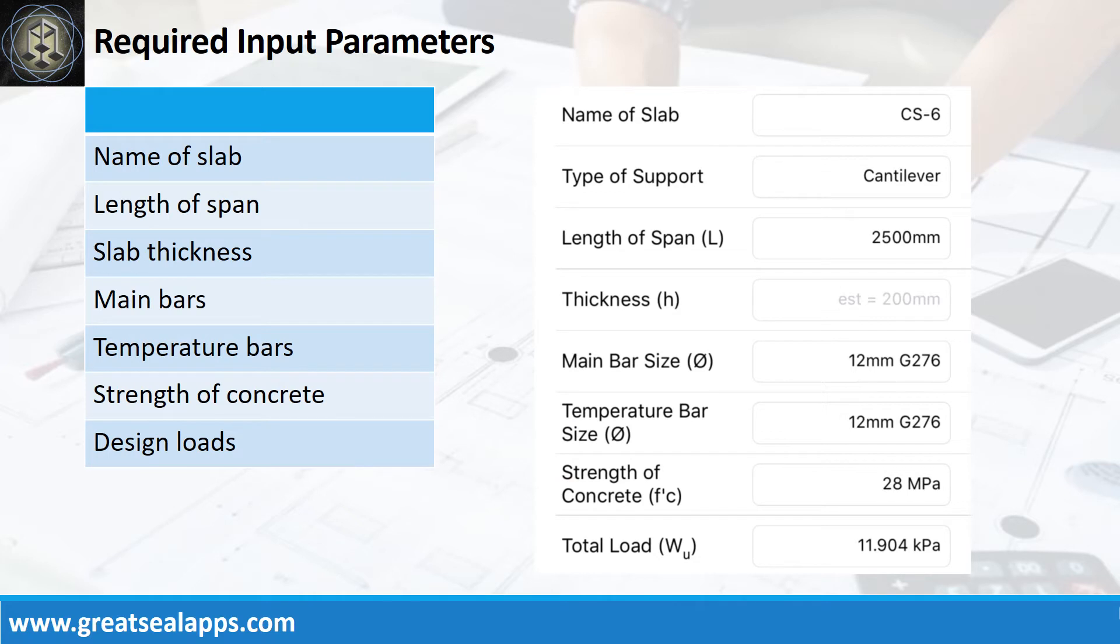Enumerate Input Parameters Required: Name of Slab CS6, Type of Support Cantilever, Length of Span 2,500 mm, Slab Thickness 200 mm, Main Bars and Temperature Bars 12 mm Bar at Grade 276, Strength of Concrete 28 MPa, and Factored Load 11.904 kN per meter.